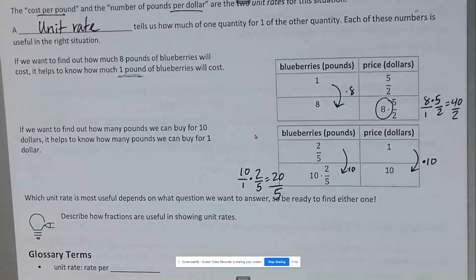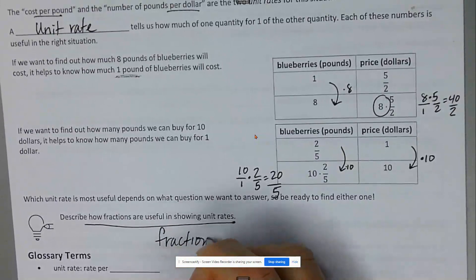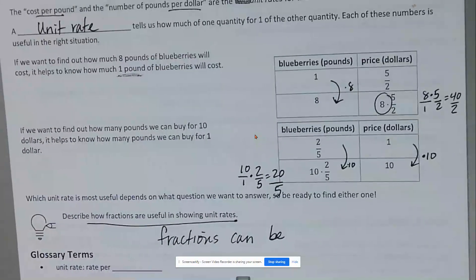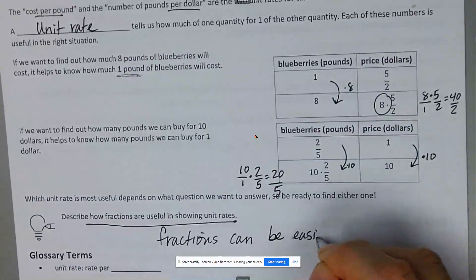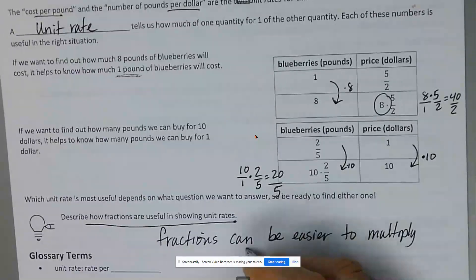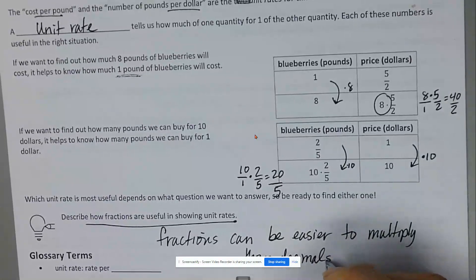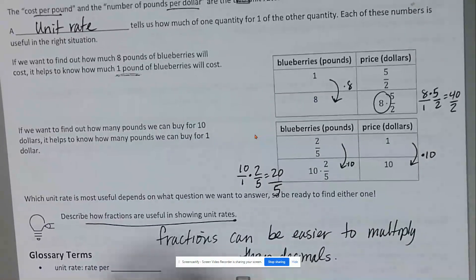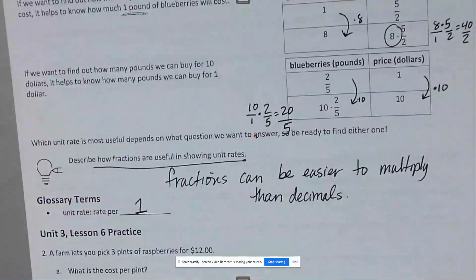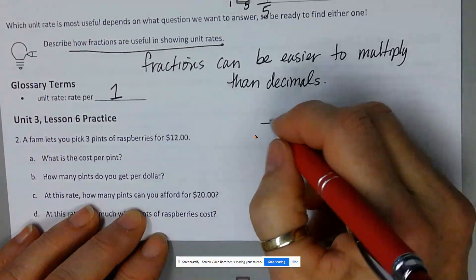Fractions are sometimes easier to multiply than decimals — unless you have your calculator. So if you don't have your calculator, it's nice to keep things as fractions. A unit rate means rate per one — everything we're doing is a rate per one.